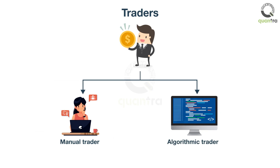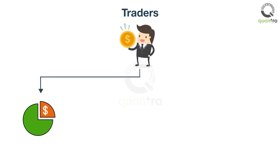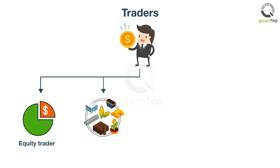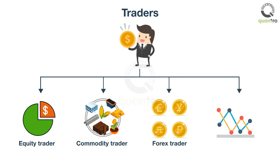Another criterion on which traders can be categorized is the asset they trade. For example, a trader involved in trading equities is known as a stock trader or an equity trader. A trader trading metal, energy products, or any such commodity is referred to as a commodity trader. A trader trading currency and currency products is known as a currency trader or forex trader. And last but not least, traders trading derivative products such as futures and options are known as derivatives traders.